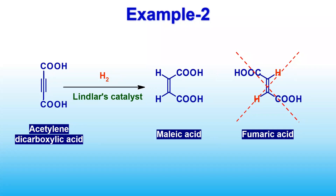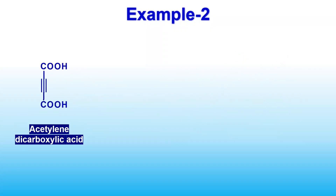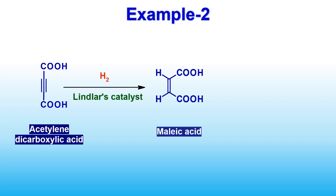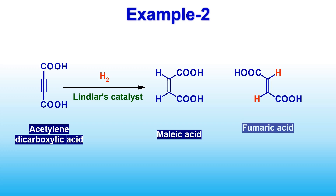In this example, acetylenedicarboxylic acid with a triple bond is hydrogenated in the presence of Lindlar's catalyst to give maleic acid, which is a cis isomer. The two hydrogens are on the same side of the double bond, because of the addition of hydrogen atoms from the same side of the triple bond. Hence, it is a stereospecific reaction. Remember that its trans isomer, fumaric acid, with two hydrogens on the opposite sides of the double bond, is not observed as a product in this reaction.